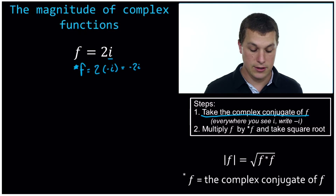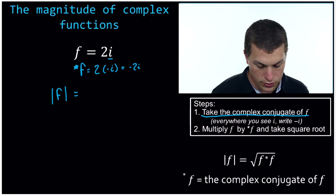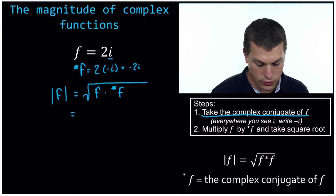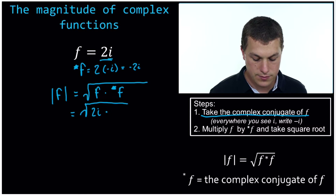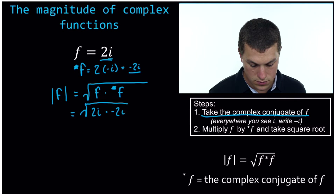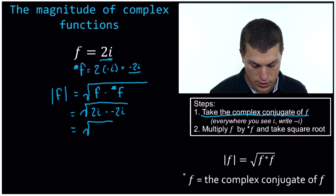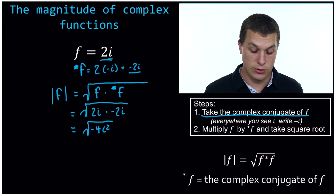The next thing we're going to do is multiply those two guys by each other and take the square root. So the magnitude of f is equal to the square root of f times the complex conjugate, f-star. We know what both of those things are: 2i, that was our original number, times negative 2i. And when we multiply those together, we're going to get the square root of negative 4i squared. Our i gets squared because there's two of them, we carry our negative sign over, and 2 times 2 is 4.